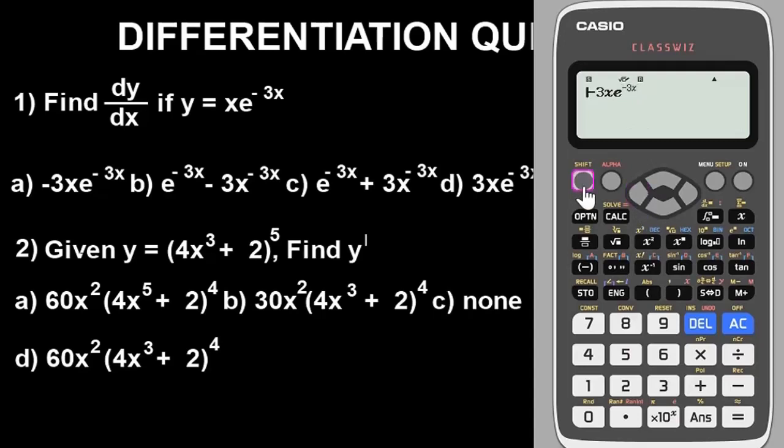No, what we got was negative 0.012. Let's check option B. The difference here is just the exponential sign. Let me adjust and add the exponential again: Shift, ln button, negative 3x, Alpha x. Very simple guys.